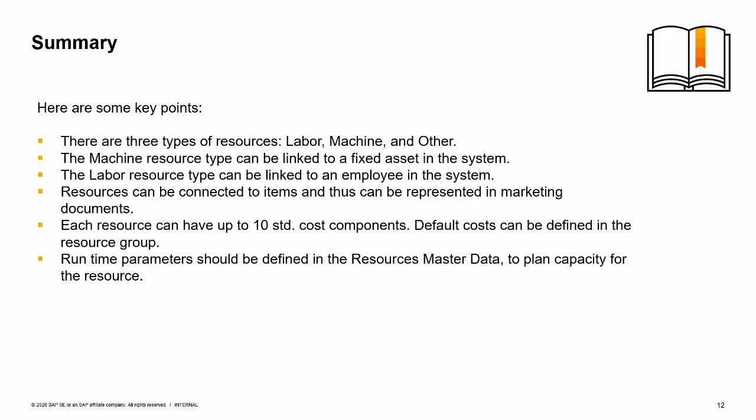Here are some key points from this session. There are three types of resources: labor, machine, and other. The machine resource type can be linked to a fixed asset; the labor resource type can be linked to an employee. Resources can be connected to items and thus represented in marketing documents. Each resource can have up to 10 standard cost components, with default costs defined in the resource group. Runtime parameters should be defined in the resource master data to plan capacity for the resource.